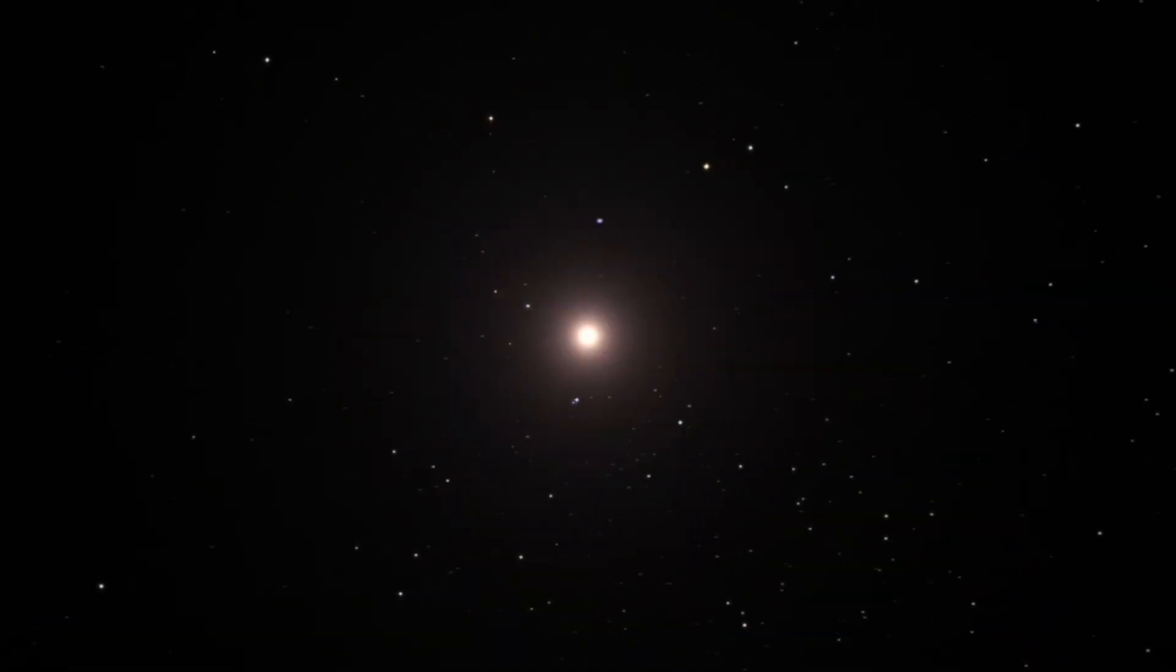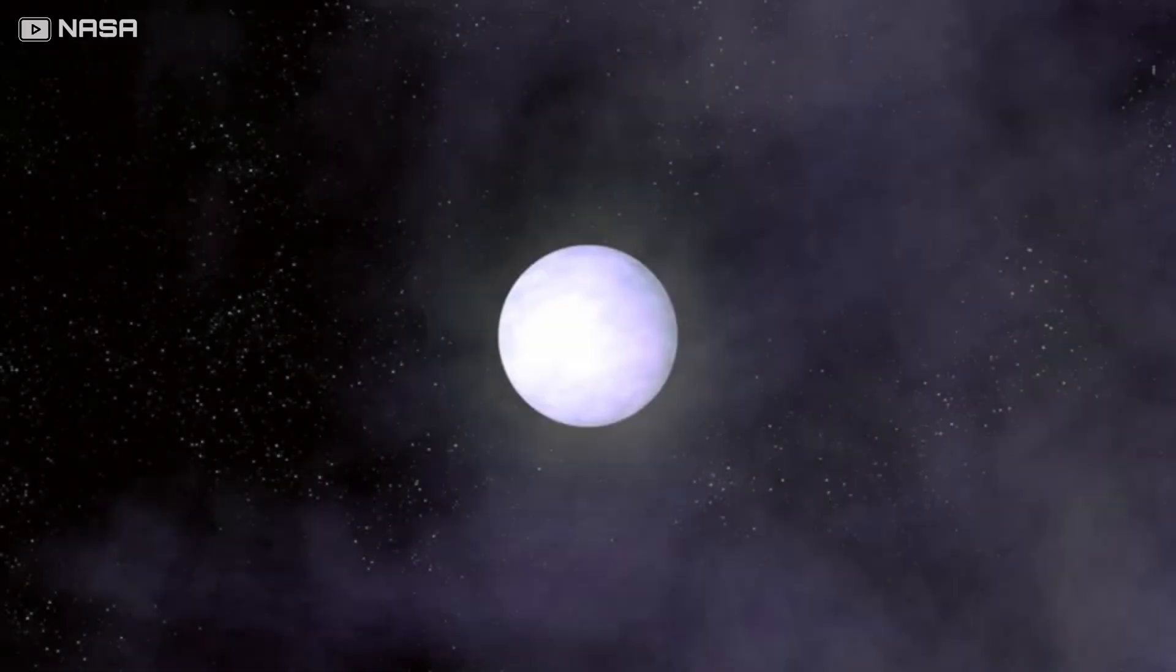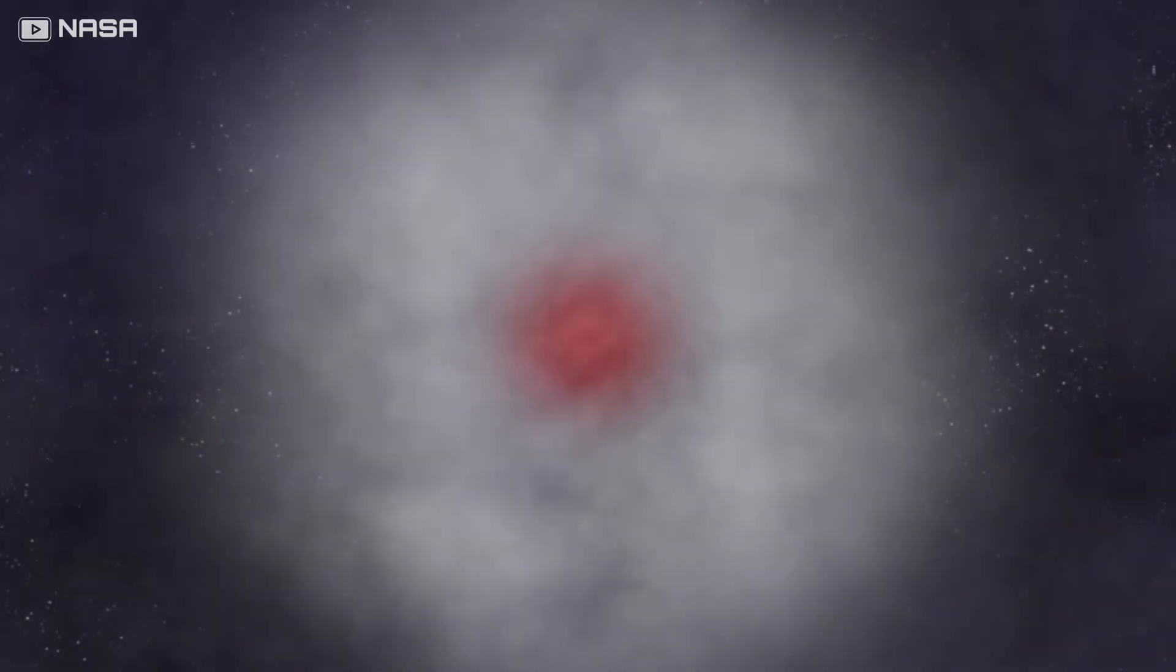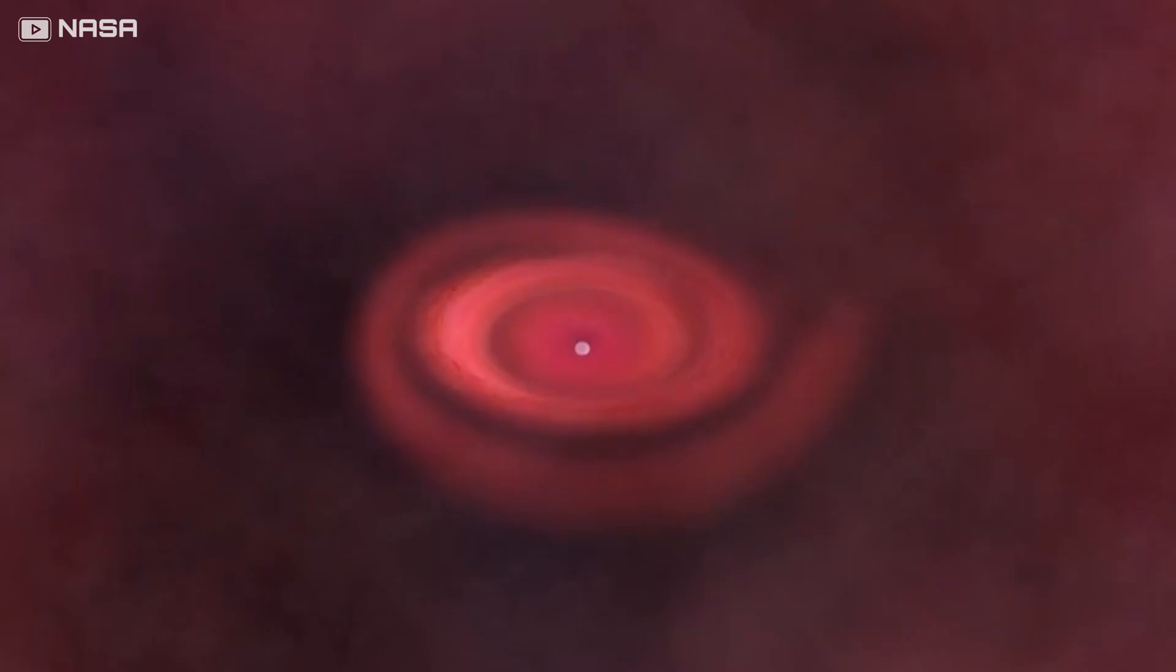Sometimes, the death of a star isn't a plain old supernova. Sometimes, it's a hypernova, a supernova on steroids. The collapse is so violent that the center doesn't stop at a neutron star. It keeps falling until it becomes a black hole.